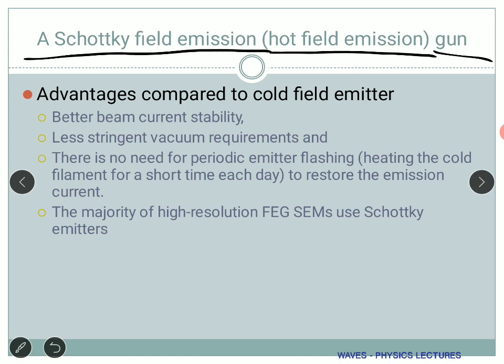The Schottky gun is a combined effect of temperature and field. Its advantages are better beam current stability and less stringent vacuum requirements. In a scanning electron microscope you need a good vacuum to avoid unwanted processes — if there is air, the high-energy electrons might cause ionization. But with the heated filament combined with the field, less vacuum is required.